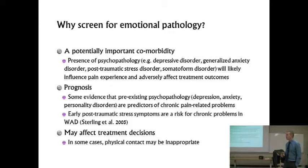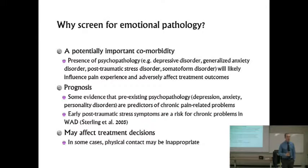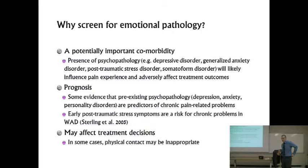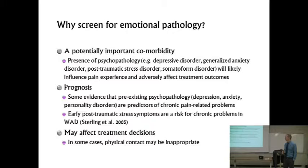We should discuss screening for emotional pathology and whether we should be doing this. On the side of yes: psychopathology is potentially an important comorbidity, especially in chronic pain. Depression is overrepresented in chronic pain populations — 50 to 70 percent of the chronic pain population may meet the threshold for diagnosable depression. This seems to influence treatment outcomes and prognosis. There's some evidence that pre-existing pathology may lead to poorer prognosis, though that evidence isn't as strong as we might think.